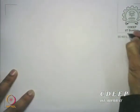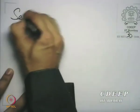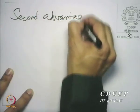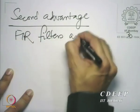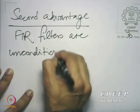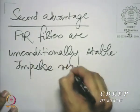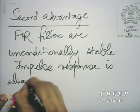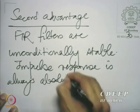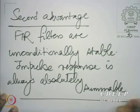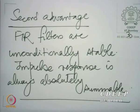The second advantage is that FIR filters are unconditionally stable. The impulse response is always absolutely summable, even in the presence of numerical inaccuracies. So if the coefficients are real, when we realize the coefficients in finite precision, there is likely to be inaccuracy in the representation of the coefficients. But even in the presence of those inaccuracies, the stability of the filter is unaffected.